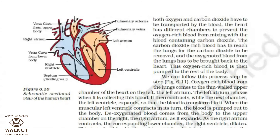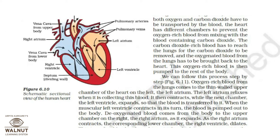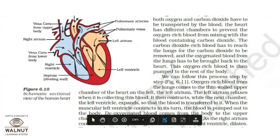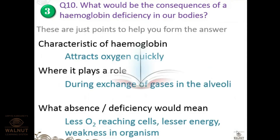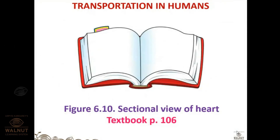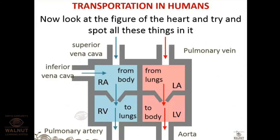There are also sheets provided by the school containing the mind map for the circulatory system. The septum is the dividing wall that separates the left part of the heart from the right part. You can look at the NCERT diagram of the heart and try to spot all these components. Questions may ask you to identify labeled parts or trace sequential blood flow.